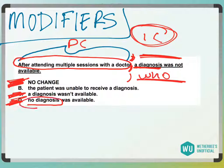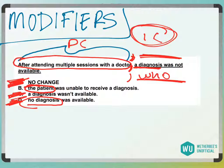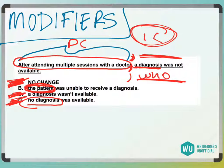Who attended multiple sessions with a doctor? It would be a person — the patient. This actually may make it a little bit longer, and usually we want to keep things as succinct as possible, but sometimes putting in an exact subject for a sentence — like 'the patient' — it'll make it a little bit longer. So who attended multiple sessions with a doctor? The patient was unable to receive a diagnosis — that would be answer choice B.